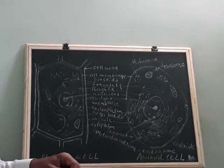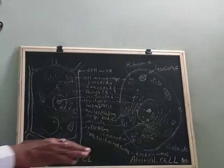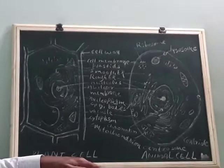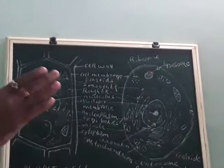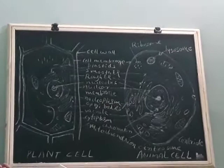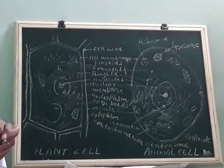Today we will come to Chapter: Cell. First of all, cell is a basic structural and functional unit of living organisms. There are many millions of cells in plants as well as animals. There was some confusion among scientists when they started studying about cells.